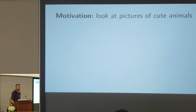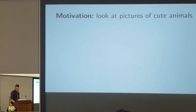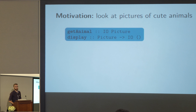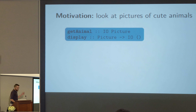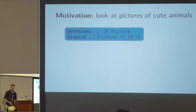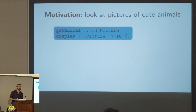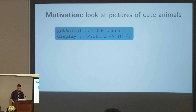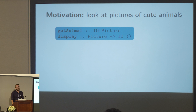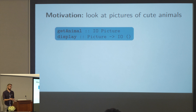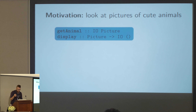In particular, I'm a Haskell programmer. So when I want to look at pictures of animals, I turn to my favorite programming language to do so. Maybe I have some API that gives me a getAnimal function that's just an IO action that gives me a picture of some sufficiently cute animal.